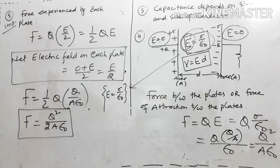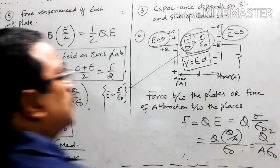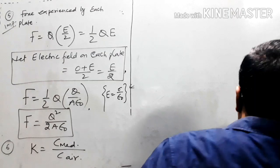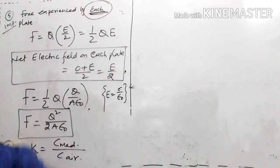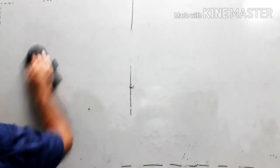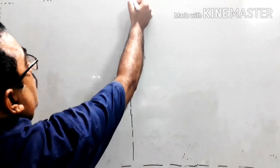Students, keep in mind that the first formula is K = C_medium / C_air. In the last video I told you that capacitance is a scalar quantity. This is the force experienced by each plate.